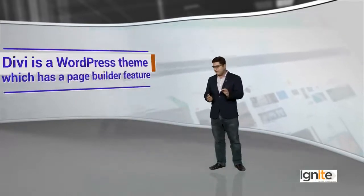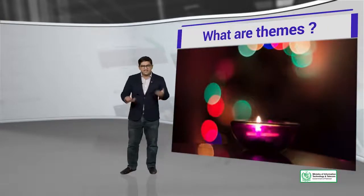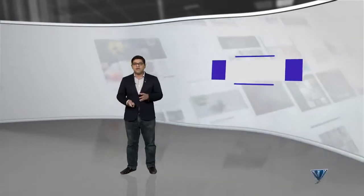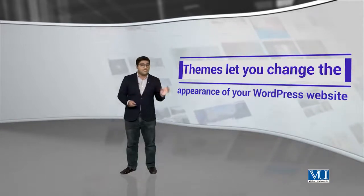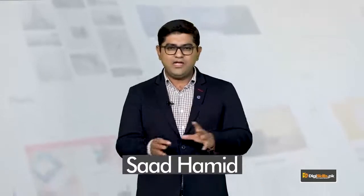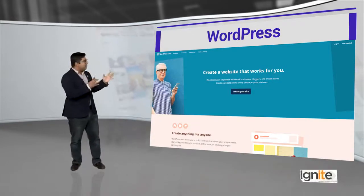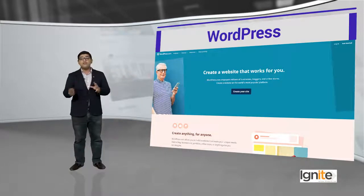Divi is a WordPress theme which has a page builder. Let's do a quick recap to understand what themes are and what functions they serve. Themes let you change the appearance of your WordPress website. Divi and Avada are basically themes — simple themes that can completely transform your website for your users. The content remains the same, but the theme structure or the visual capacity changes.